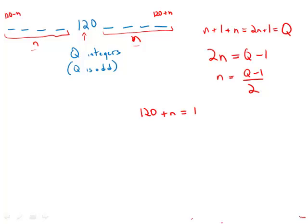That means the largest number, which is 120 plus n, would be 120 plus this expression for n, which is Q minus 1 over 2. And this is answer choice A.